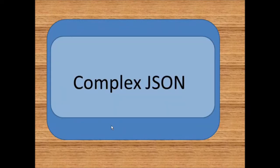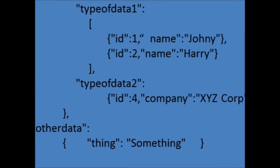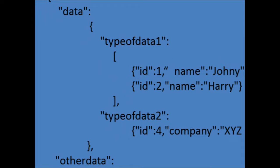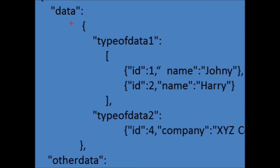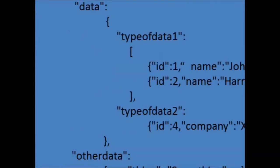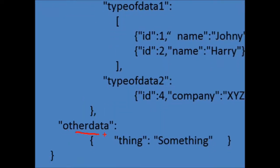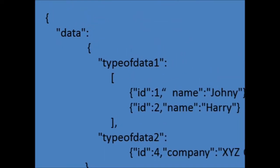Now we'll take an example of a complex JSON string whose data structure is not repetitive. You can see there are two root elements: one is Data and the other is OtherData. Inside Data there is an element TypeOfData1, which is a list having fields ID and name with two records. There is also TypeOfData2 having fields ID and company, but it's not a list. The last root element OtherData has only one attribute: Thing.